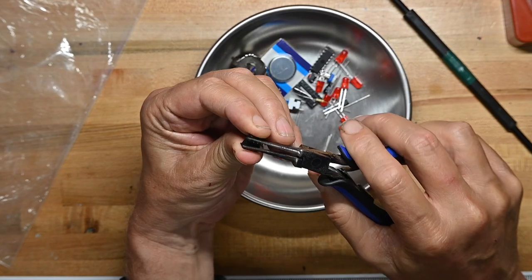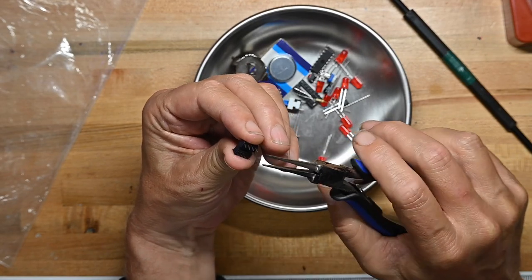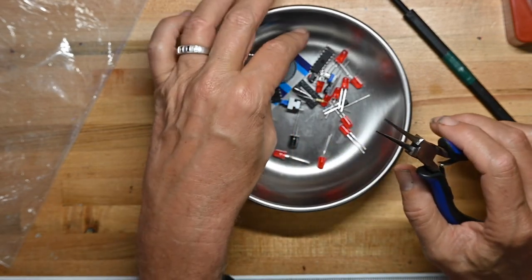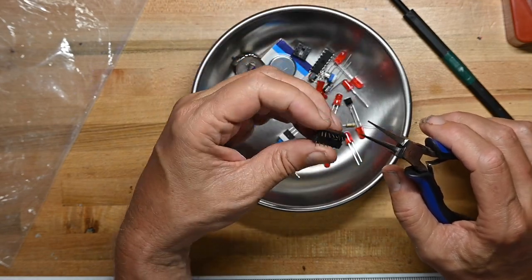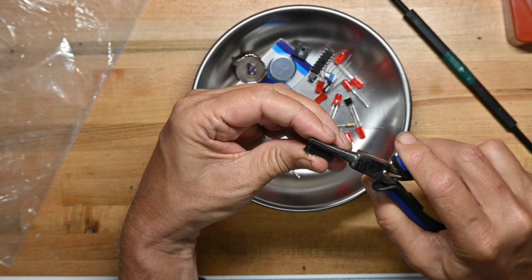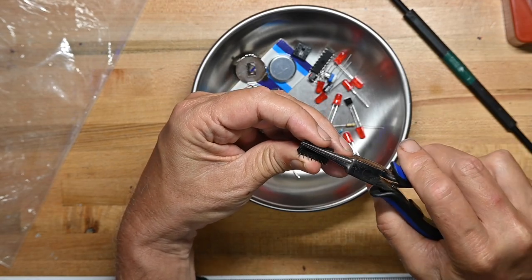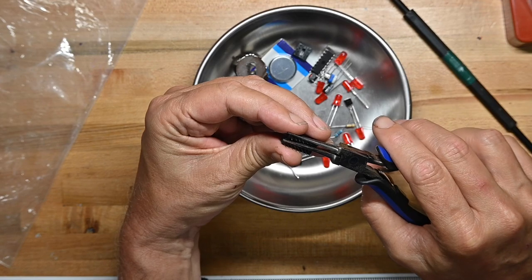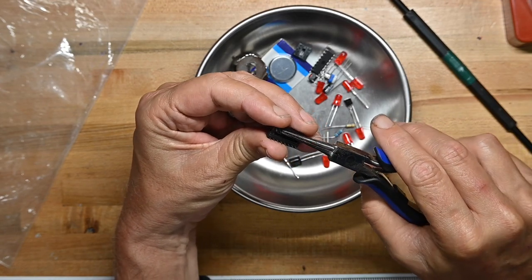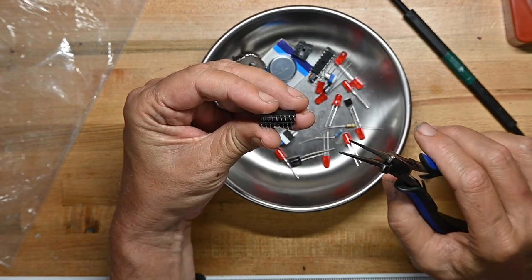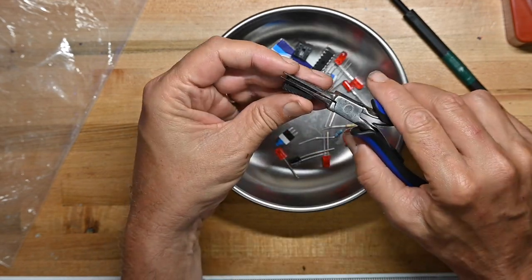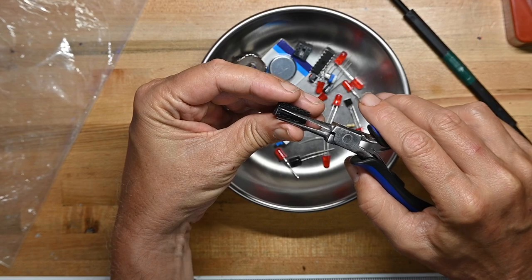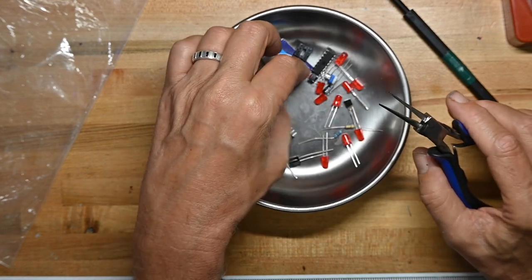So I'm straightening up the pins. This board actually comes with sockets for the ICs. Many of these inexpensive kits simply have you solder the IC directly to the board. But this comes with sockets, which I think is good for training and to get used to how you put chips in sockets. This may be the first time somebody puts a chip in a socket. So I'm glad they include them.